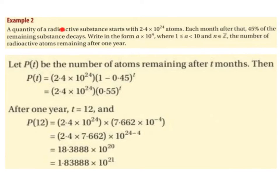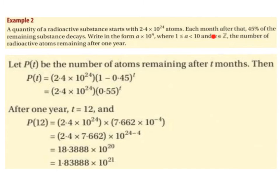A quantity of a radioactive substance starts with 2.4 times 10 to the power of 24 atoms, written in scientific notation. Each month after that, 45% of the remaining substance decays. We want to write in the form a times 10 to the power of n, where a is greater or equal to 1 but less than 10, and n is an integer — a positive or negative whole number. We want to find the number of radioactive atoms remaining after 1 year.